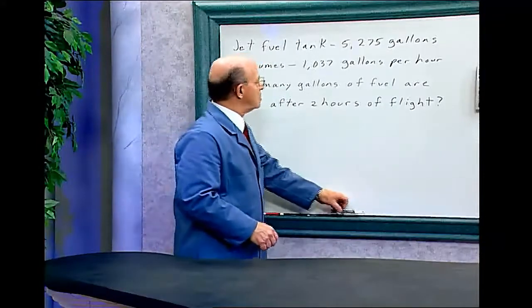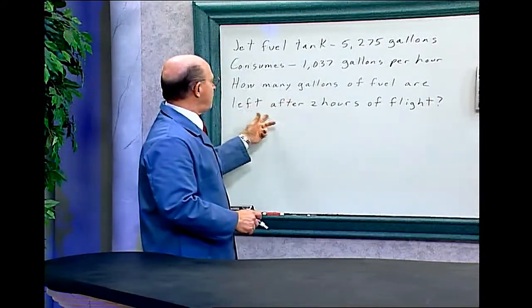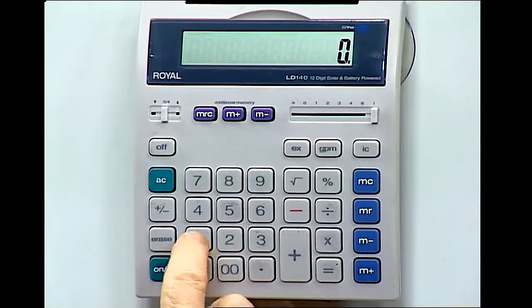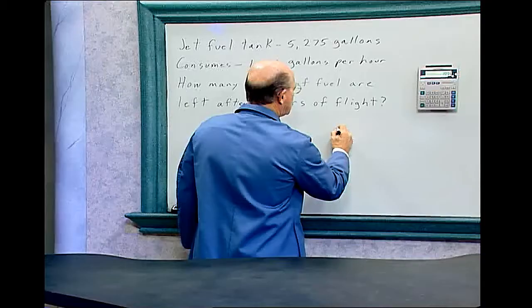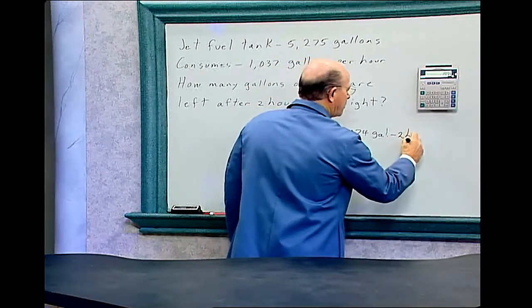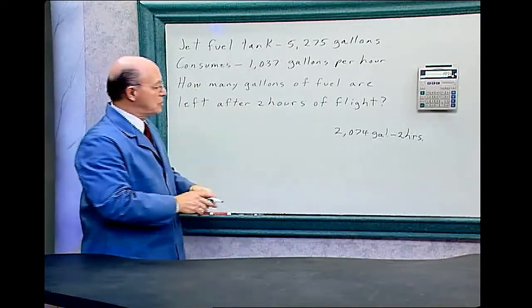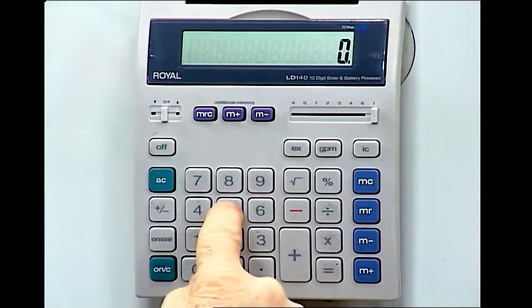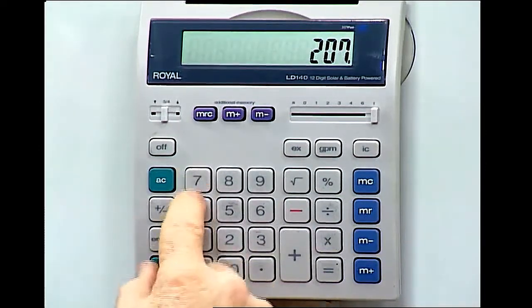Let's do the math. The jet consumes 1,037 gallons per hour. And we want to find out how many gallons of fuel are left after two hours of flight. So we can add up two hours of fuel consumption. 1,037 plus 1,037 equals, so it's 2,074 gallons in two hours. And now we have to find out the question is, how many gallons of fuel are left? So let's clear the calculator, and we put in the number up here, 5,275 into the calculator. 5,275, and you deduct the amount that was used in two hours. 2,074 equals, so it's 3,201 gallons of fuel are left.